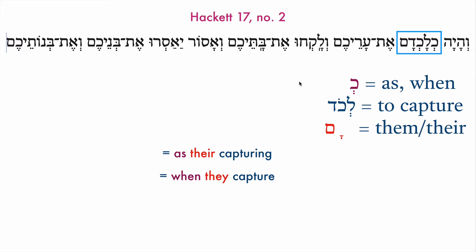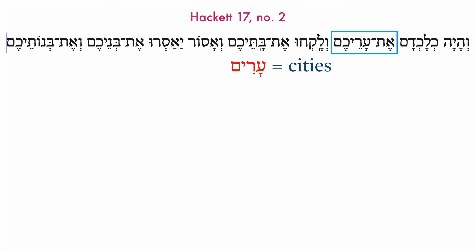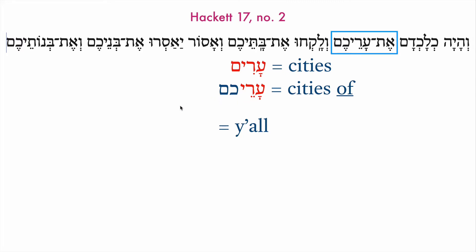It will get more familiar with time, I promise you. Moving along, things are pretty simple from here on out. Et arekem: direct object marker, followed by the noun arim, 'cities.' The construct form of arim is aray, 'cities of,' and then we get the suffix chem — 'y'all.' So: 'it will come to pass when they capture your cities.'